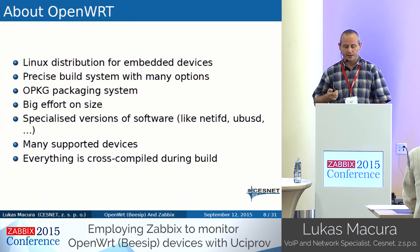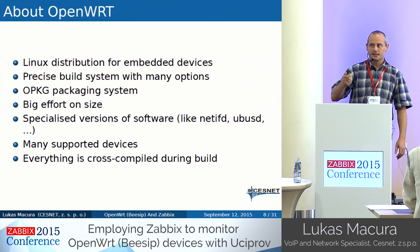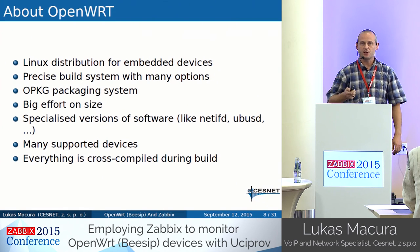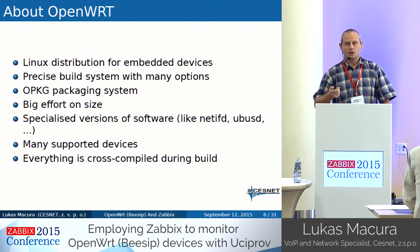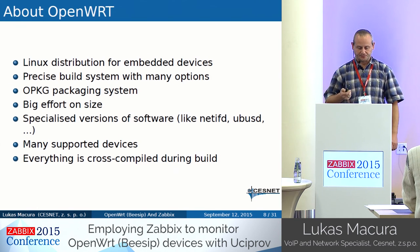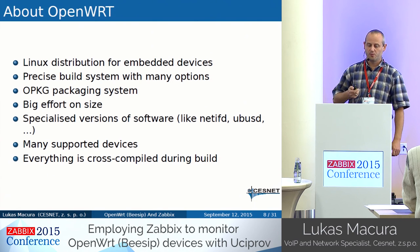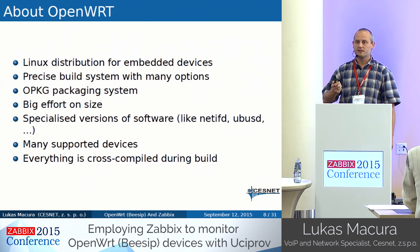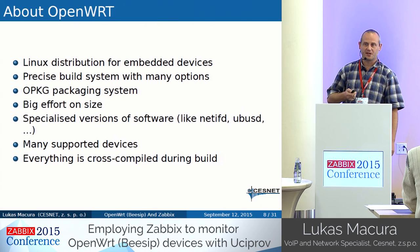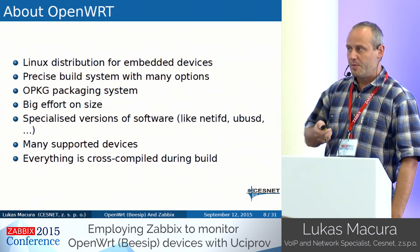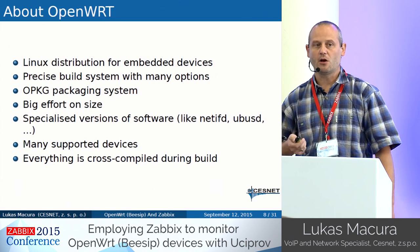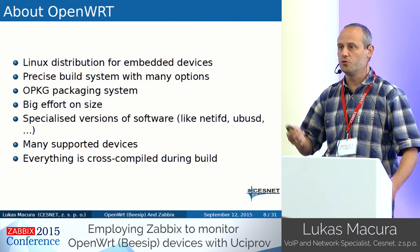OpenWrt is a Linux distribution for embedded devices. Today it's not only for routers - there are a lot of softwares and things you can do with it, and one target is a virtual appliance for VMware, KVM, or similar. It has a light but powerful packaging system, and developers are very focused on size - one megabyte might be considered too much - because everything is optimized for size. They made their own versions of interface daemons and common bus structures because all software everywhere is too large to fit into small devices.